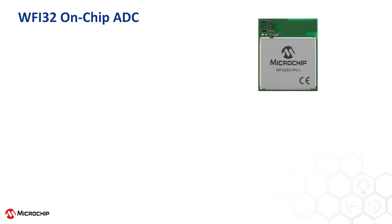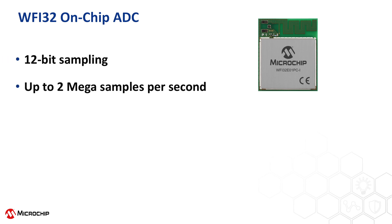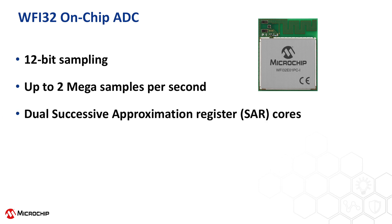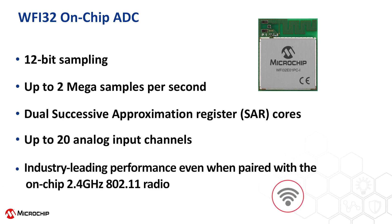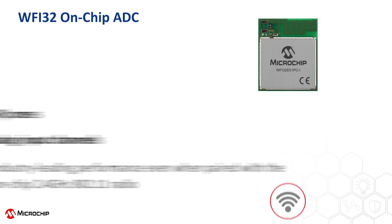The WFI32 device family comes with a power-packed 12-bit 2MSPS dual-core SAR ADC with up to 20 analog input channels. Even when paired with the on-chip 2.4 GHz 802.11 radio, this ADC showcases excellent, industry-leading performance.